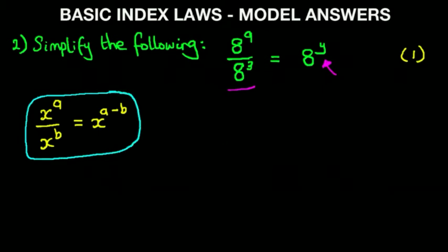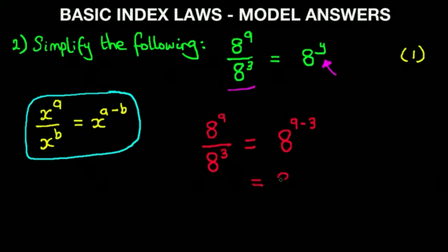So let's work through the question. We have 8 to the power of 9 divided by 8 to the power of 3. This becomes 8 to the power of 9 minus 3, and that becomes 8 to the power of 6. Therefore y equals 6. And that is the answer.